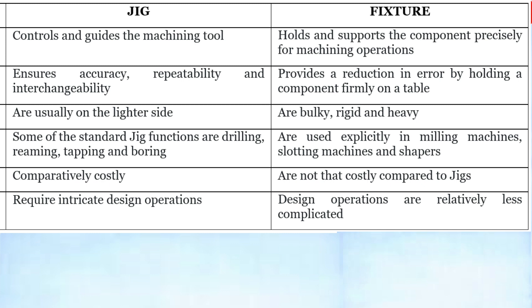Generally, a jig is lighter and not very heavy, whereas a fixture is generally bulky, rigid, and heavy. To give some examples: jigs are generally used for drilling, reaming, tapping, or boring operations, while fixtures are generally used with milling machines, slotting machines, and shapers.